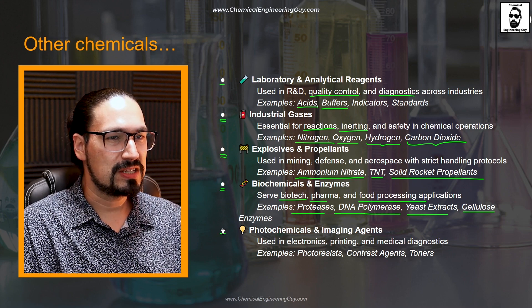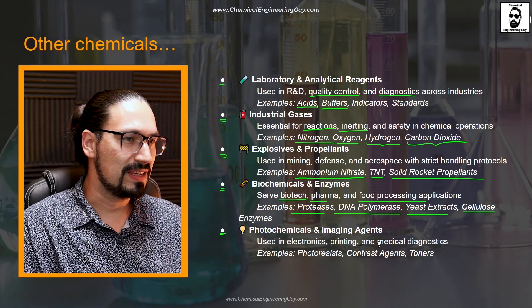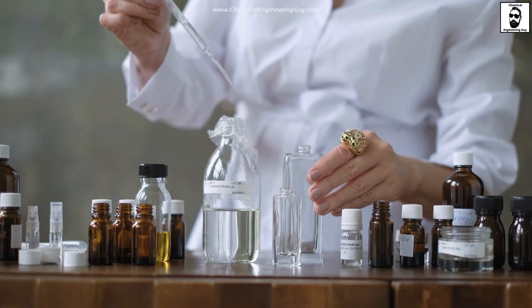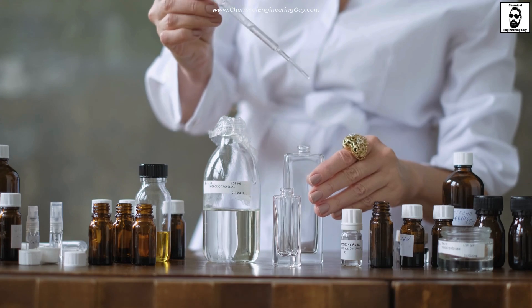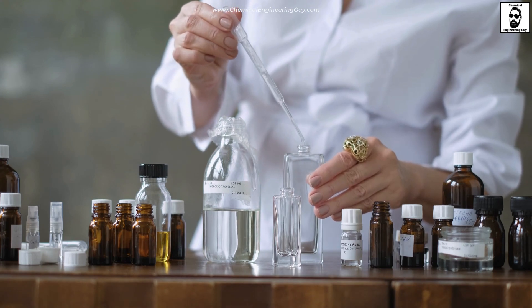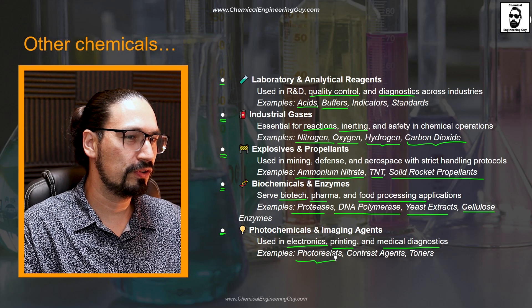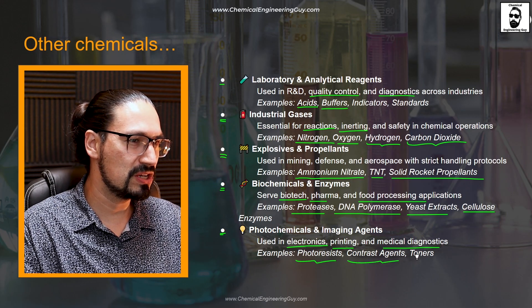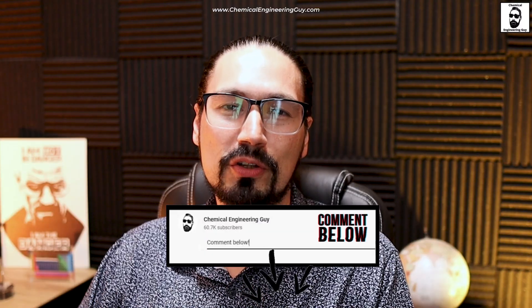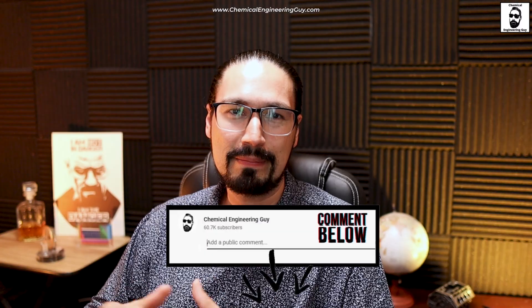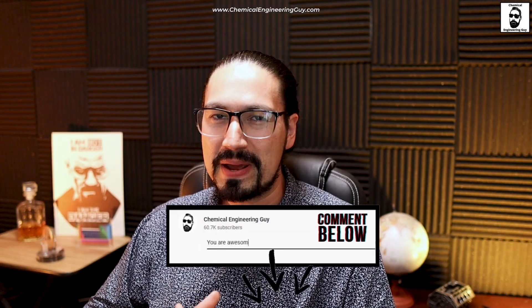Another example is photochemicals and imaging agents, used in electronics, printing, and medical diagnosis such as X-rays. This includes photo-resistant materials, contrast agents, toners, and such. Of course, there are many other types of chemicals that can be categorized in many ways, but I think we've covered a very interesting range of chemical categories.